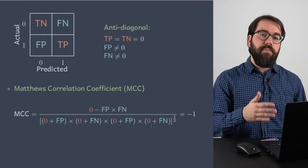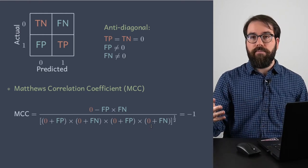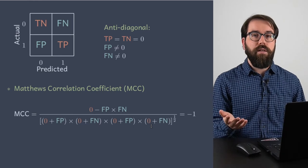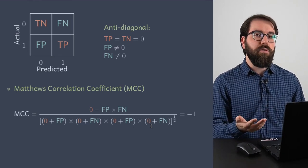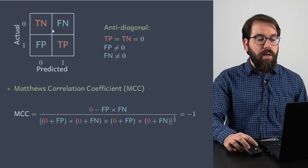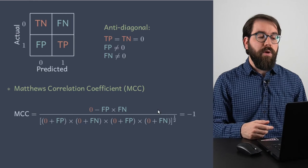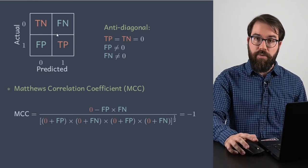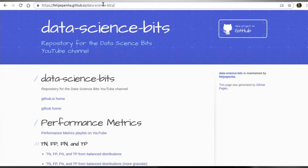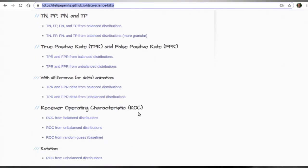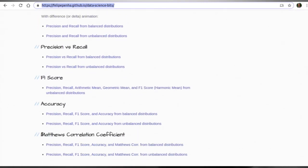So it's obvious now that the MCC varies from minus 1 to 1. Because the accuracy is between 0 and 1, you are already getting more information out of the MCC, since it can detect the extreme case of an anti-diagonal confusion matrix. Now let's take a look at how moving the threshold changes the MCC values compared to accuracy, recall, precision, and F1 score. Let's go to the website to check the plots I prepared — I will provide the link in the description. Scrolling down to the last section, you have the Matthews correlation coefficient for balanced and unbalanced distributions.